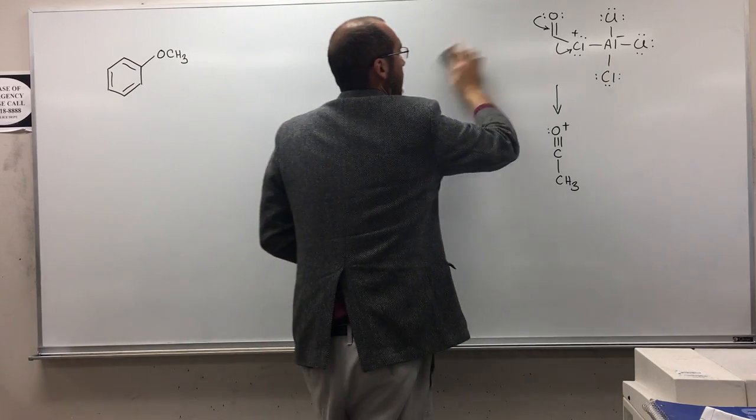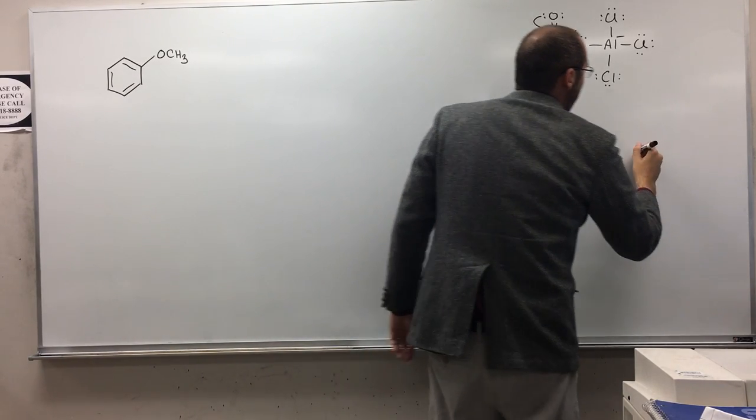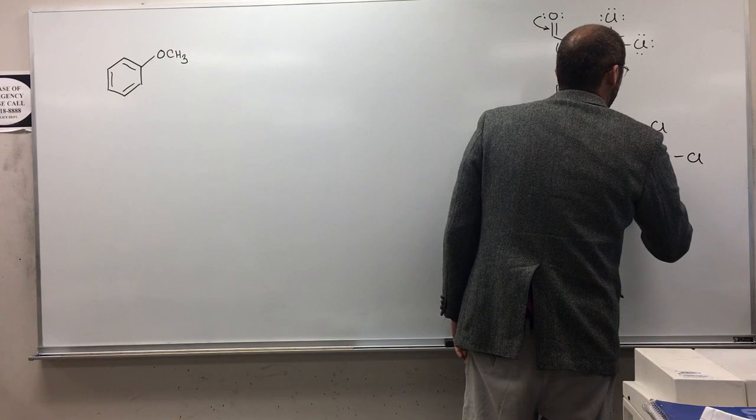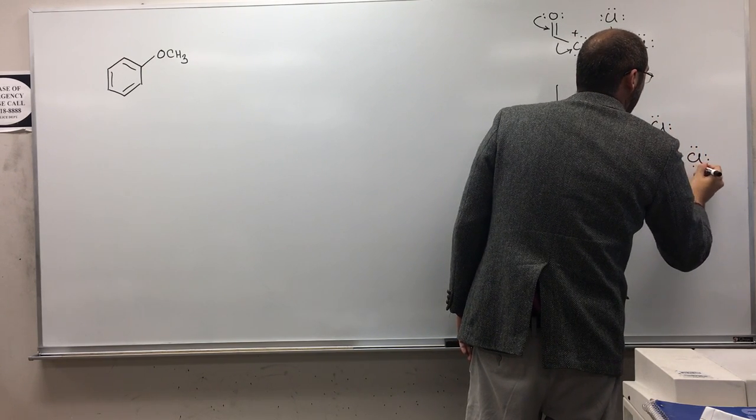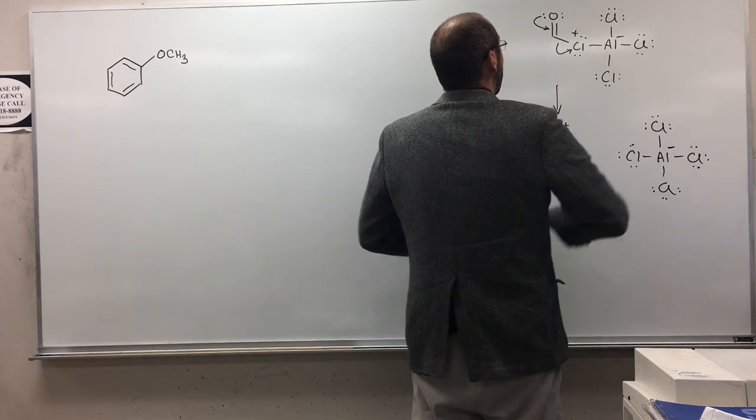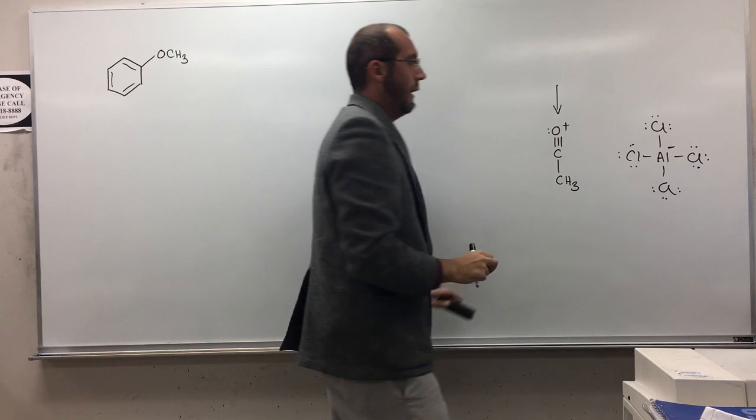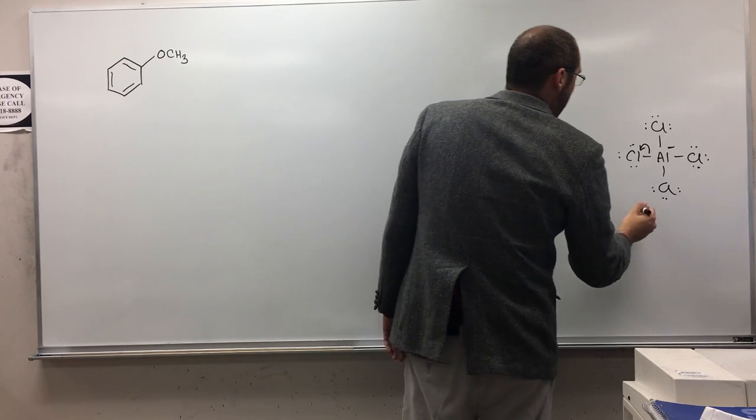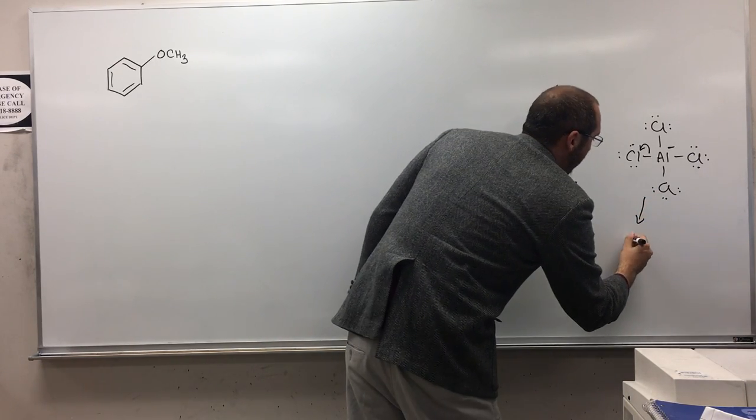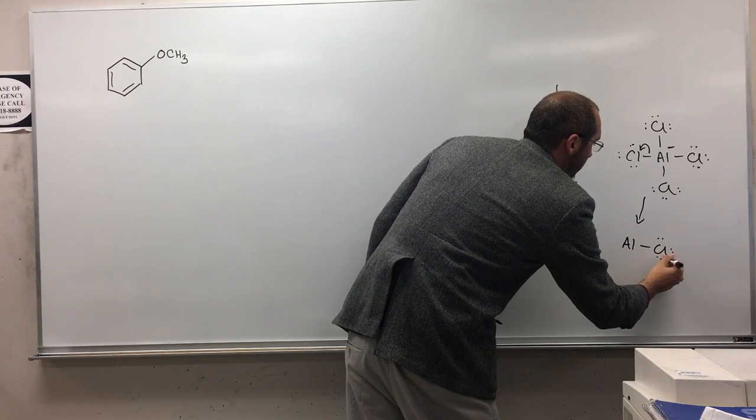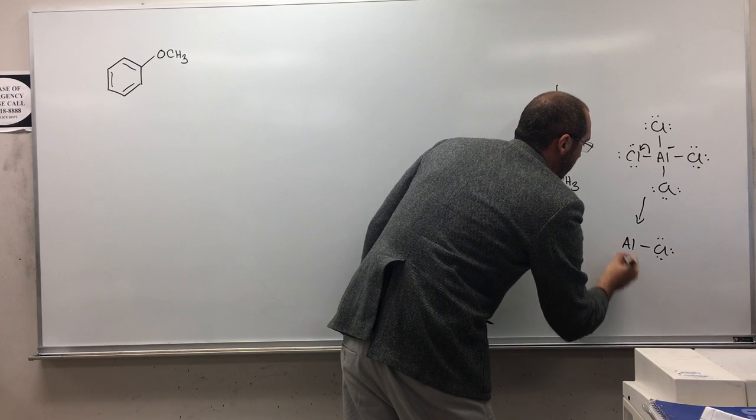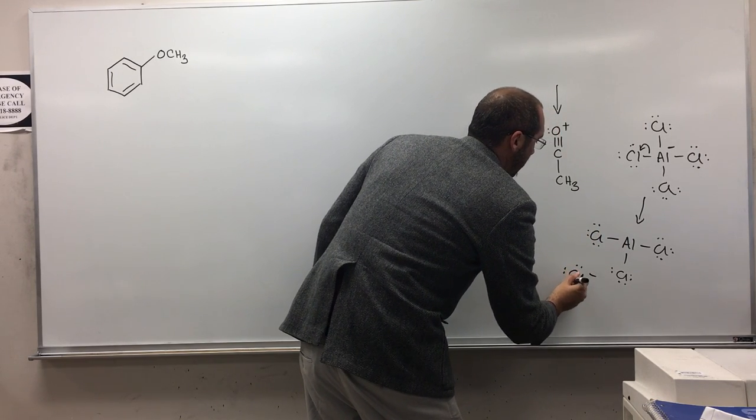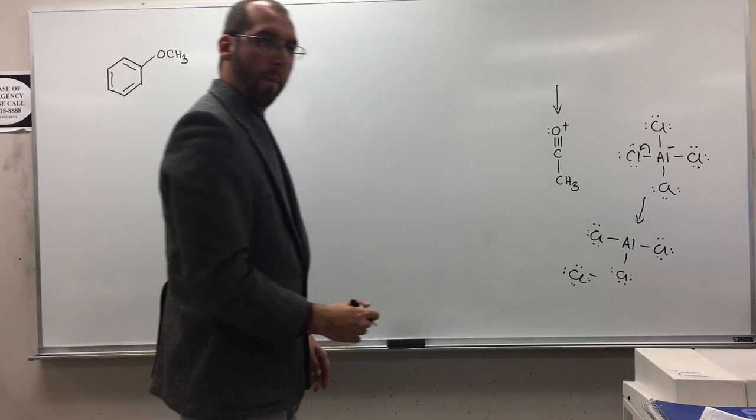Okay. And what happens to the chlorine? Oh, okay, yeah. So I guess we can draw that too. So we still have this, right? Yes. And then these electrons just go back like that. So when that happens, we now have reformed our catalyst, aluminum chloride, and we have the Cl-. Okay? Are we good? Okay.